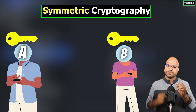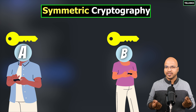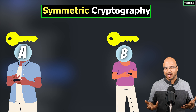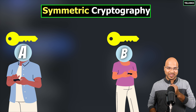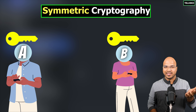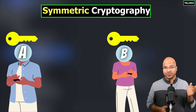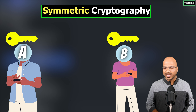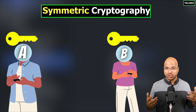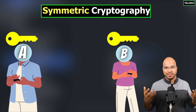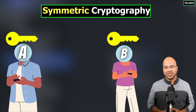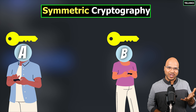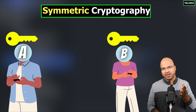The problem with symmetric keys is that this key needs to be shared before the communication. They cannot share this key on the internet because C can see the key and then decrypt all messages. The key needs to be shared beforehand — maybe they can meet in person, share the key, and then do the communication. It's a somewhat impractical approach, but symmetric cryptography is still very widely used.